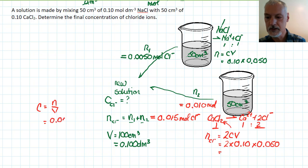So 0.015 divided by 0.1 gives me a final of 0.15 moles per decimeter cubed of the chlorine ion, which we often represent with square brackets.